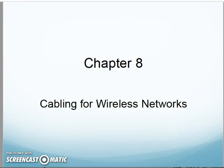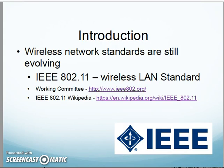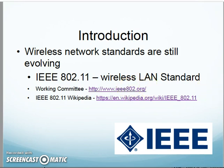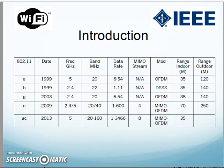Alright, CNT 140, we're looking at chapter 8 on cabling for wireless networks. They focus a bit on the cabling necessary for wireless networks but also spend time reviewing wireless network concepts. The first thing they talk about in their introduction is that wireless network standards are still evolving. I'll remind you of your 802.11 wireless standards — I have links here to Wikipedia and the working group, which is our predominant group for standardizing Wi-Fi networks.